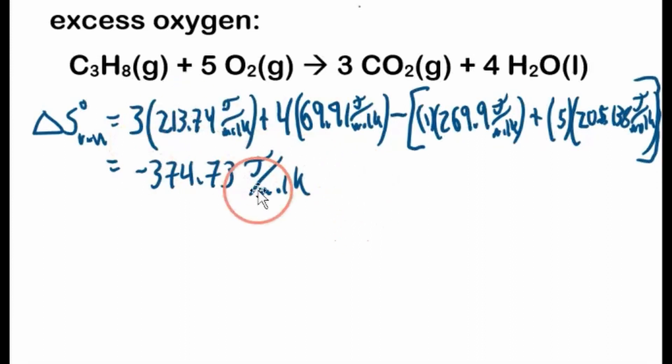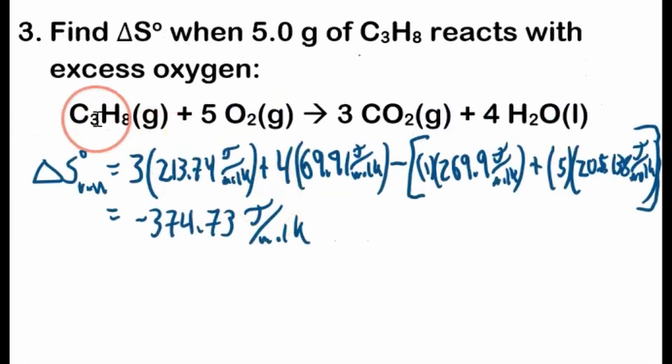And okay, now this isn't our answer, this is per mole of the reaction, just like in the last question, and for every 1 mole of the reaction that occurs, 1 mole of propane reacts, 5 moles of oxygen react, and we get 3 moles of CO2, and 4 moles of water, so for every 1 mole of reaction.